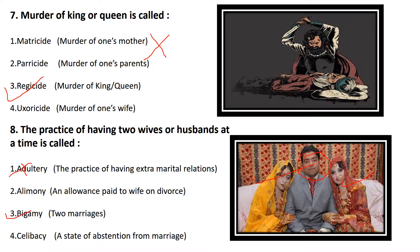The eighth is: the practice of having two wives or husbands at a time. For example, if a person has two wives, or a woman has two husbands, the word for this relationship is bigamy. Adultery means the practice of having extra-marital relations — not exactly right. Alimony means an allowance paid to a wife on divorce — not the answer. Bigamy means two marriages — that is the right answer. Celibacy means a state of abstaining from marriage.